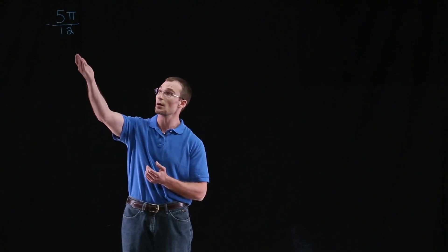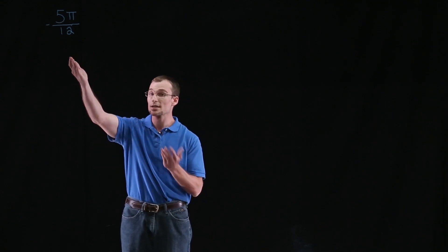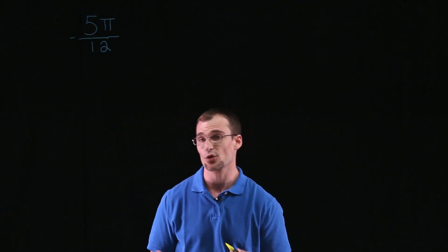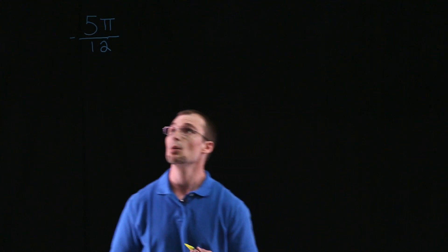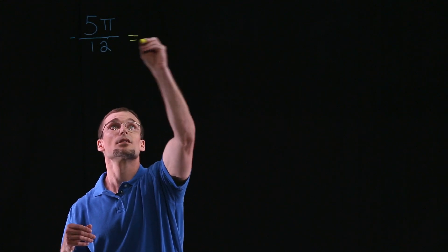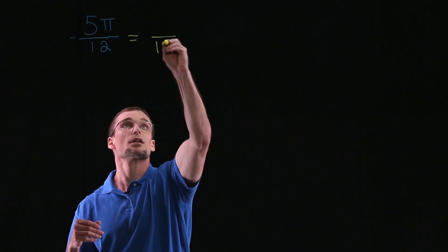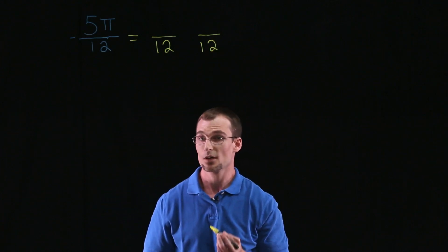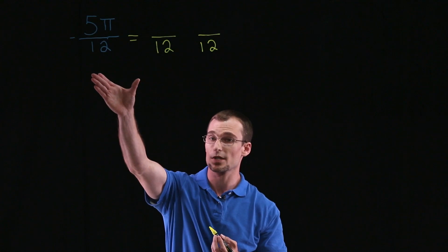So the first thing we want to start with is writing our, call it the goofy angle, as a sum or difference of angles. And what we want to shoot for is angles that we do know the values of, like we just said — multiples of pi over 6, pi over 4, pi over 3, or pi over 2. So here we go. Now, granted there is a little bit of trial and error with this. We have negative 5 pi over 12, and we're going to write this as a sum or difference of two separate angles. So we're just going to do some fractional arithmetic.